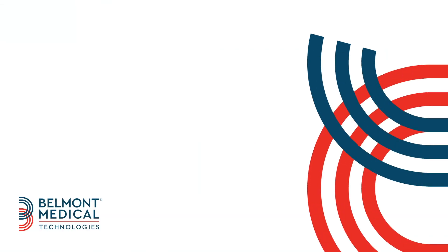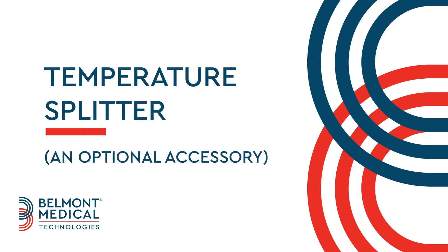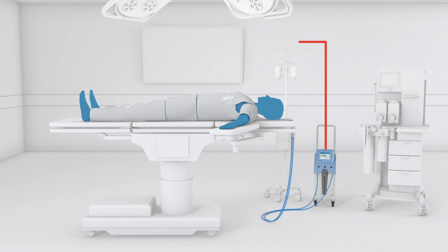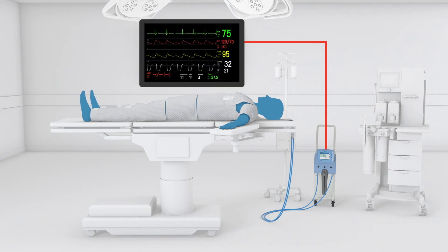This segment introduces you to an optional accessory called the temperature splitter, which can be used with both Alon and Critical and shows you how to set it up. The temperature splitter allows you to share the patient's core temperature from your Belmont temperature management system with an external monitor.